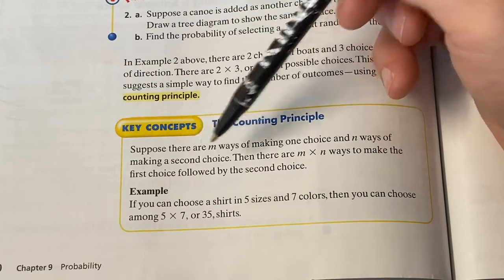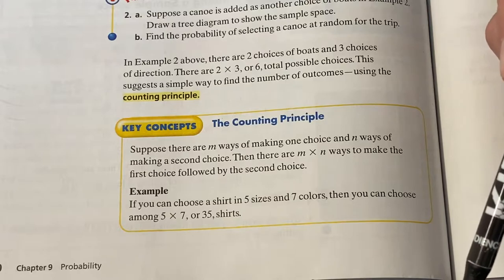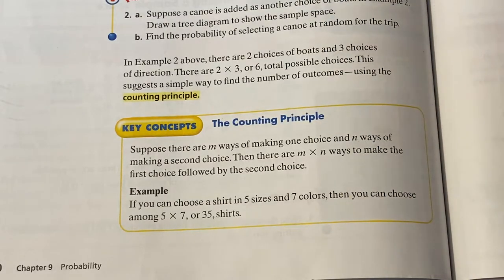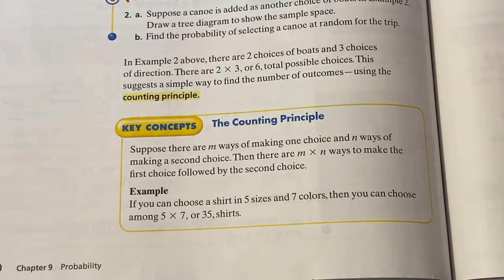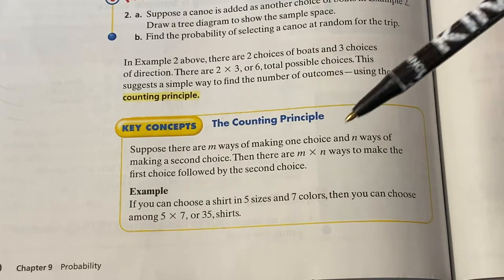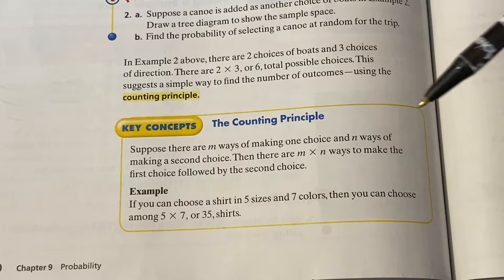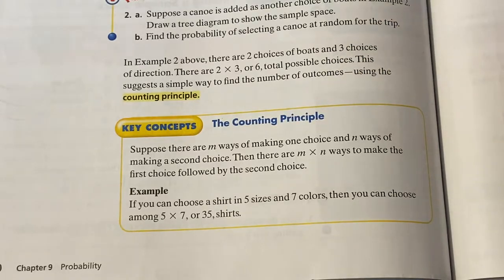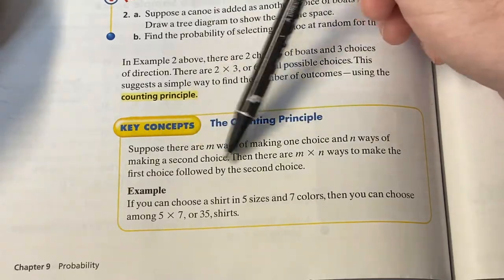The counting principle basically says, and you can pause this video and read what it says here exactly. In layman's terms, if I can just kind of say it in a way that I think you will understand, the counting principle says that if you want to count the number of ways that something can happen, if you're doing more than one choice, you just multiply the number of ways each individual thing can happen. Like I said, I tried to maybe make that easier if you understand. Maybe I did, maybe I didn't. But read the example here.